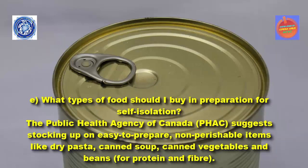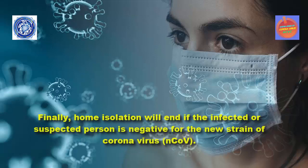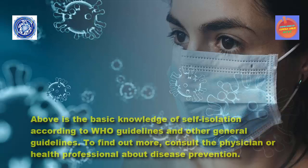What types of food should you buy in preparation for self-isolation? The Public Health Agency of Canada (PHAC) suggests stocking up on easy-to-prepare non-perishable items like dry pasta, canned soup, canned vegetables, and beans for protein and fiber. Home isolation will end if the infected or suspected person tests negative for the new strain of coronavirus. The above is the basic knowledge of self-isolation according to WHO guidelines and other general guidelines. To find out more, consult a physician or health professional about disease prevention.